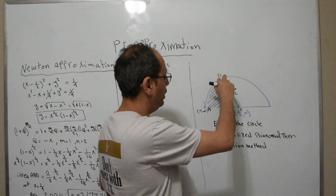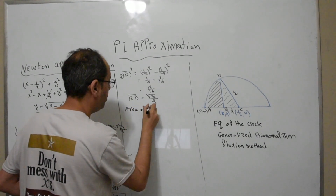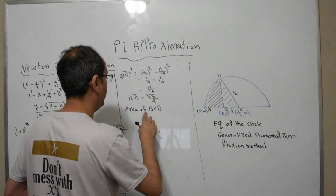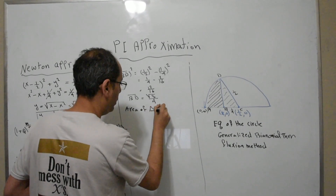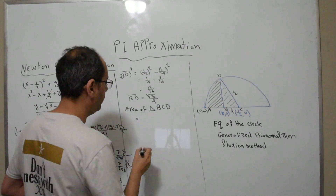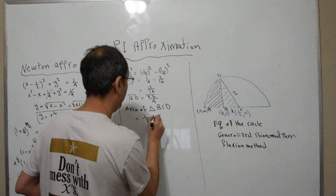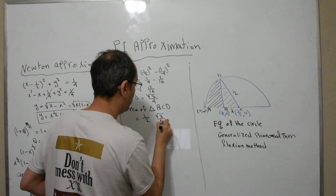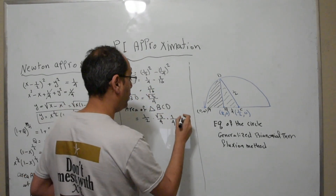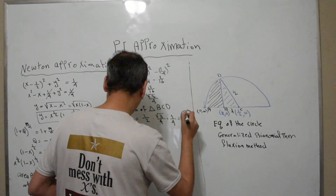Now I can compute the area of triangle BCD. Area = (1/2) × height × base = (1/2) × (√3/4) × (1/4). That gives √3 / 32. So I now have the area of the curved region ABD and the area of the triangle BCD.